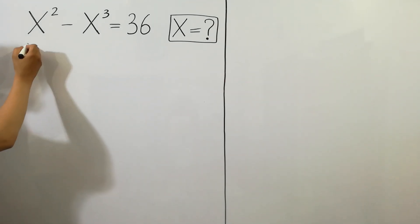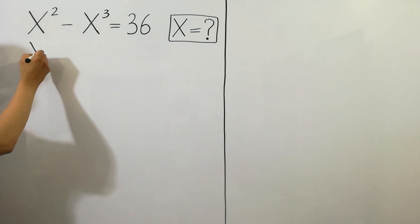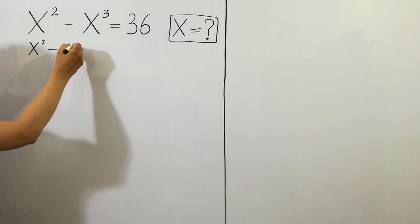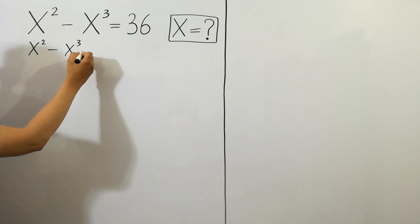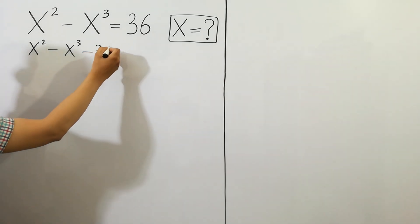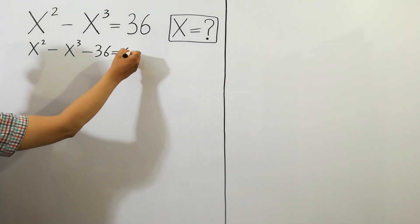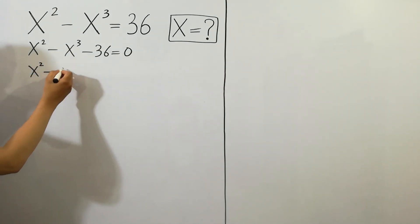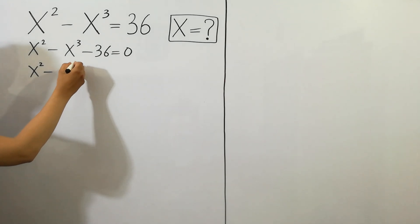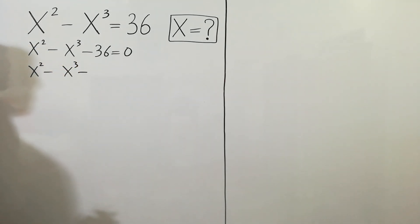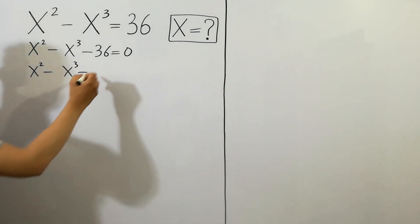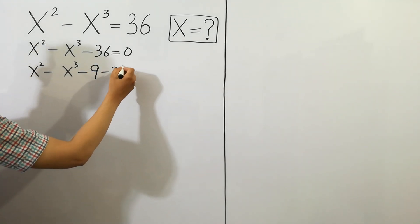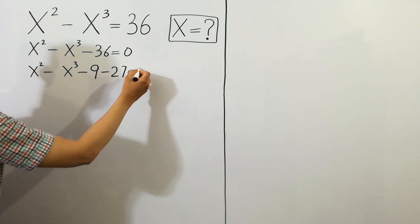Firstly, we can write here: x squared minus x cubed minus 36 is equal to 0. And next, x squared minus x cubed minus 36 can be written as minus 9 minus 27 is equal to 0.